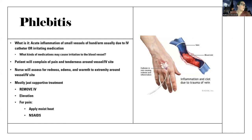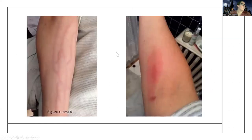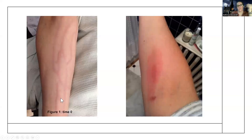Here is a picture. This was obviously an IV that had some phlebitis, and you can see the streaking here - all of the inflammation of the veins - and it can really irritate. It doesn't even have to be just the vein. This one on the right seems like it's just where the IV was, but these ones it seems like it really irritated those veins.